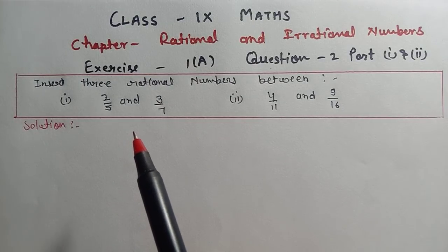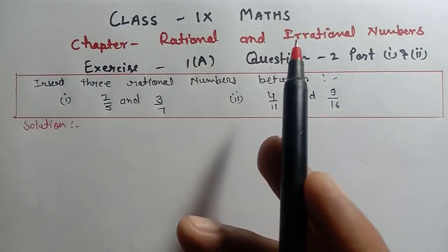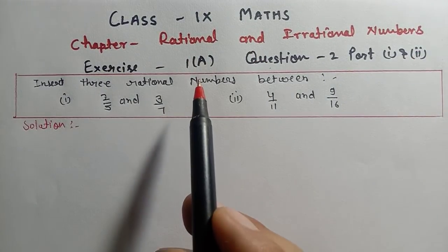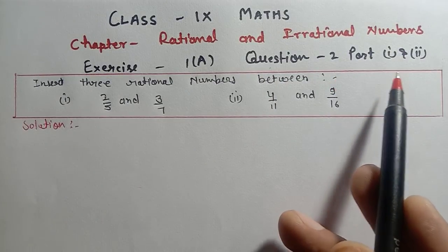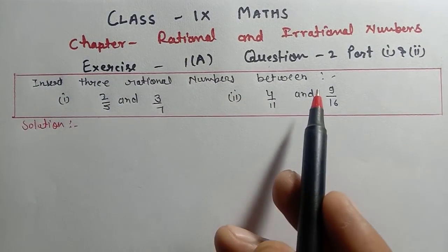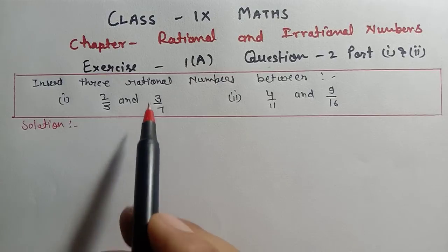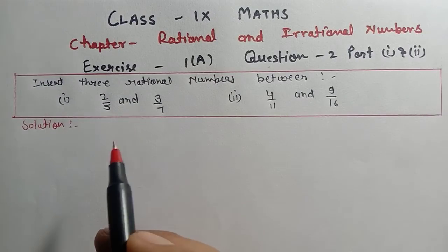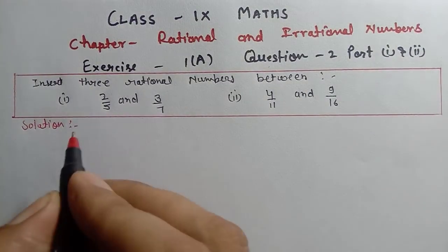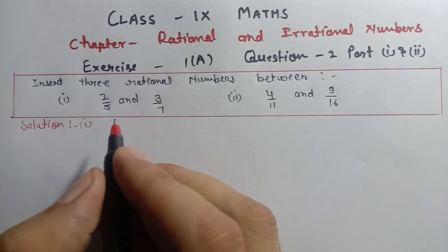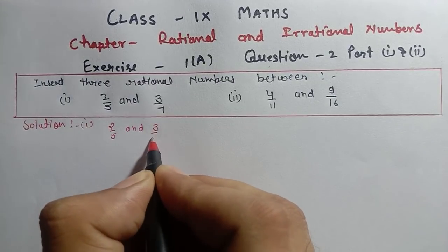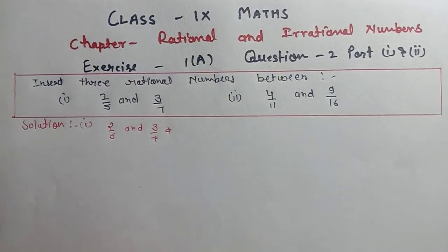Hello students, welcome to this channel. Today in Class 9 Maths, ICSE Board Chapter 1, we have rational and irrational numbers. Exercise 1E, Question 2, Part 1 and Part 2. We will insert 3 rational numbers between two given fractions.